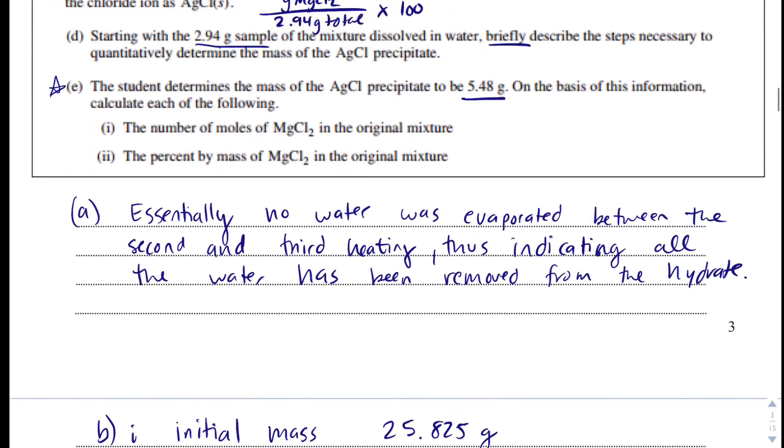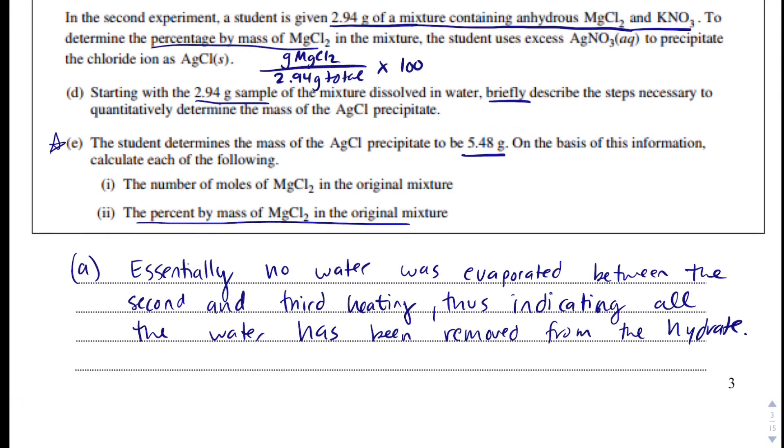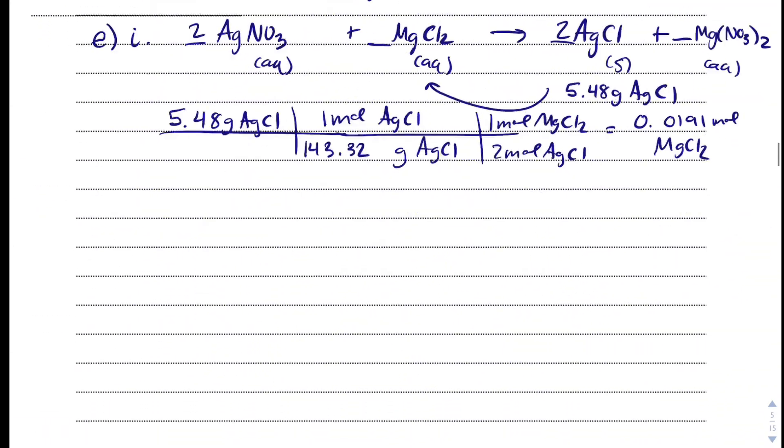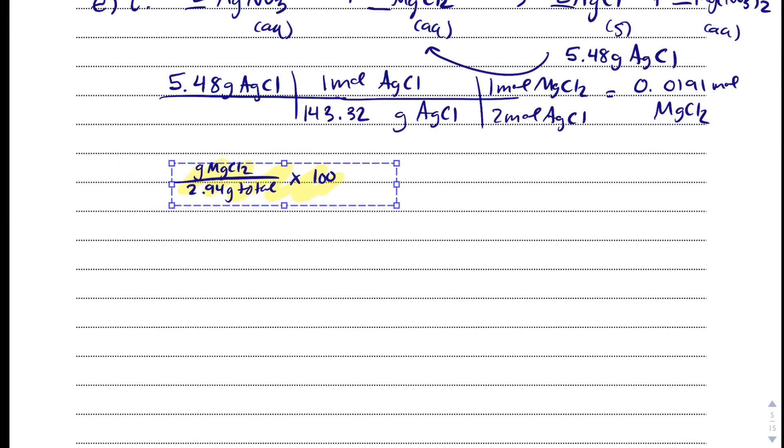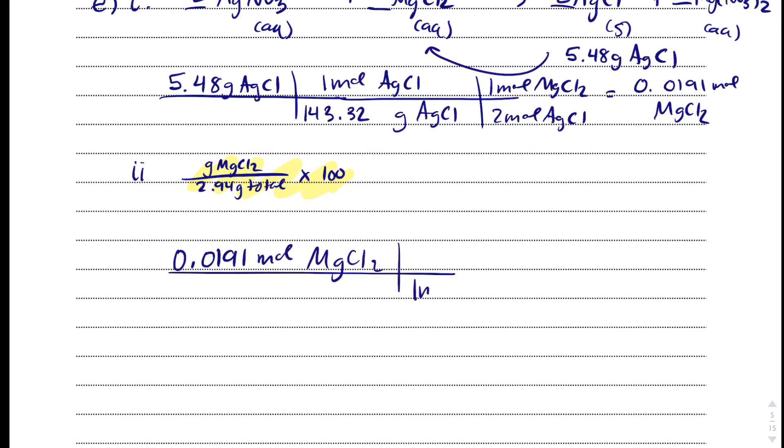And they just want to know the percent by mass of the magnesium chloride in the original mixture. That's going to be this formula. So, I'm just going to copy this and bring it down here. What I need to probably do one step further, and I don't know why they didn't have me do this in part 1. But sometimes AP does this, is that in 1 mole of MgCl2, there's going to be 95.2 grams of MgCl2. And we get 1.82 grams of MgCl2.